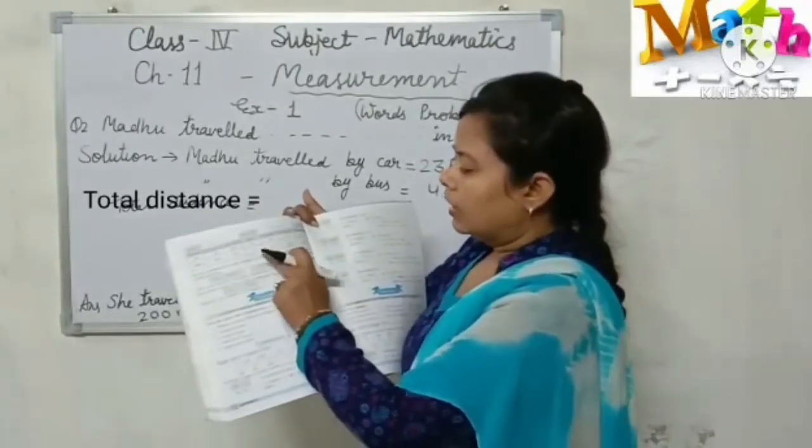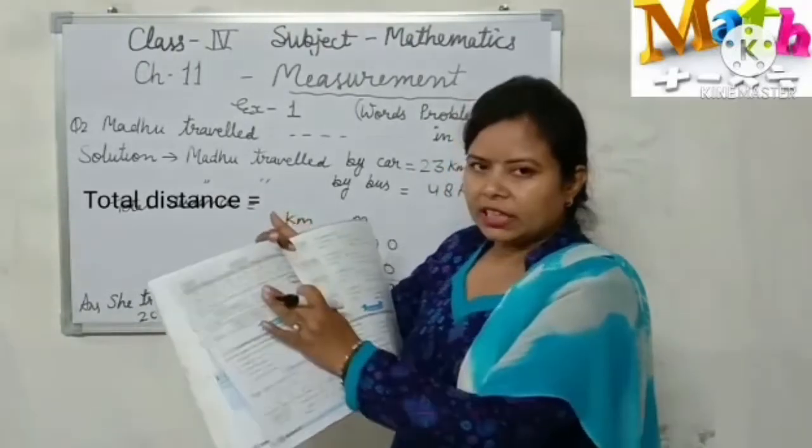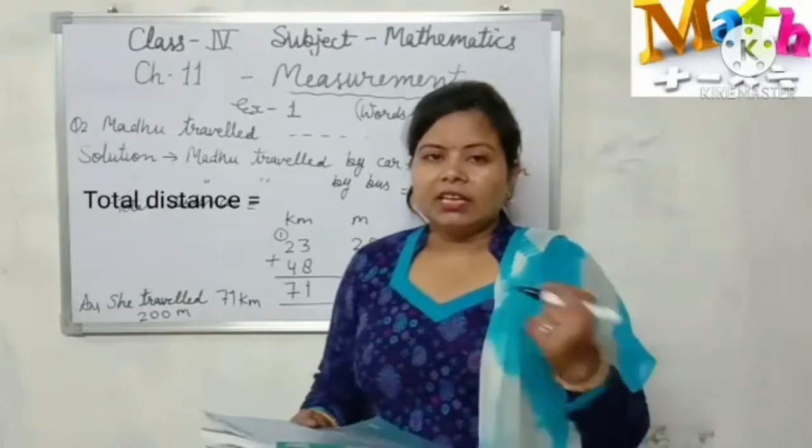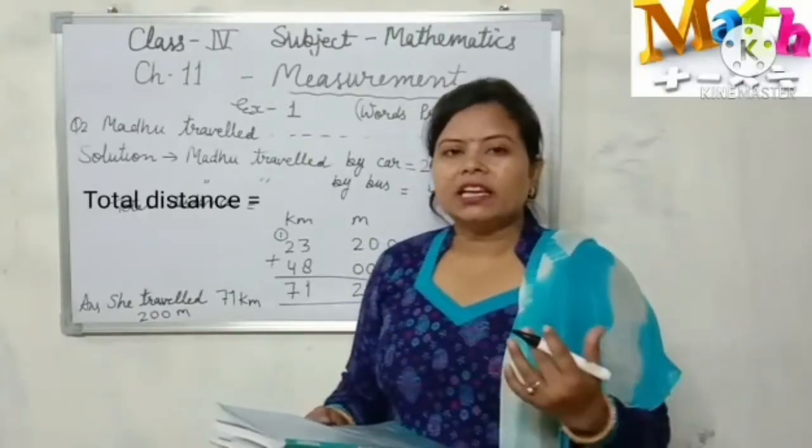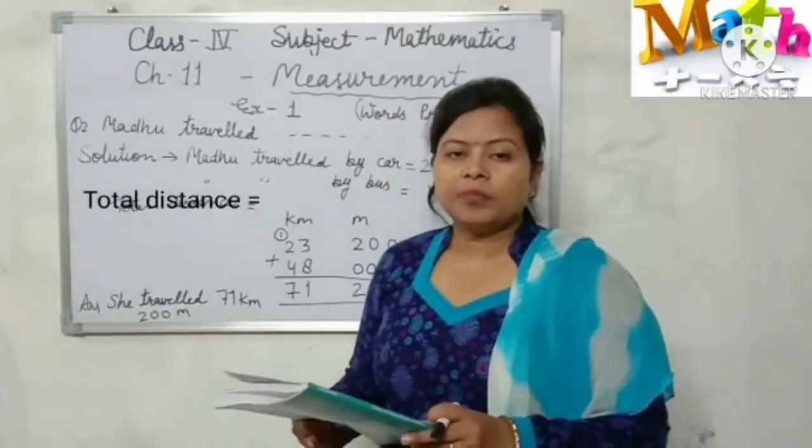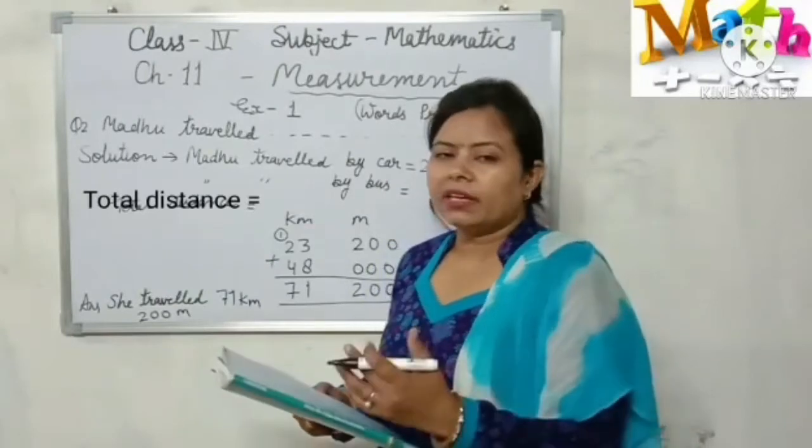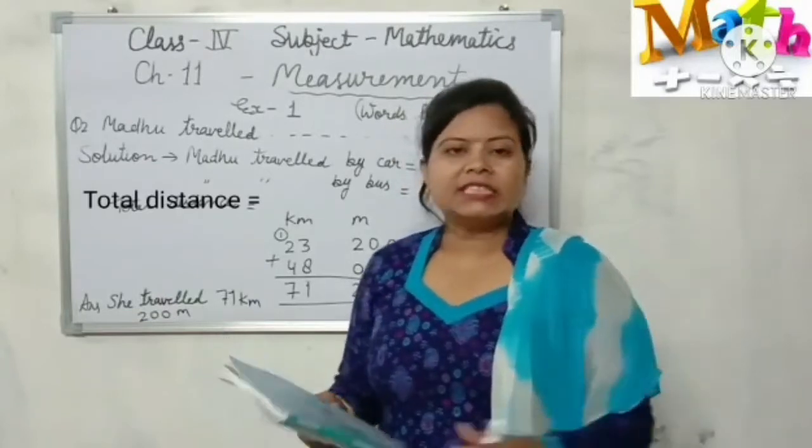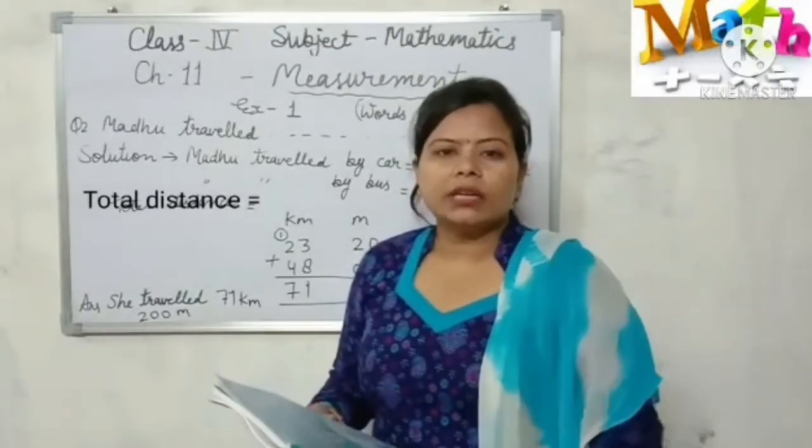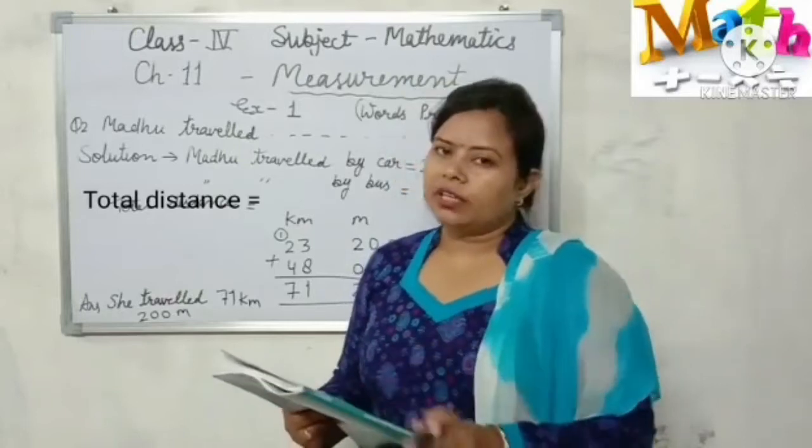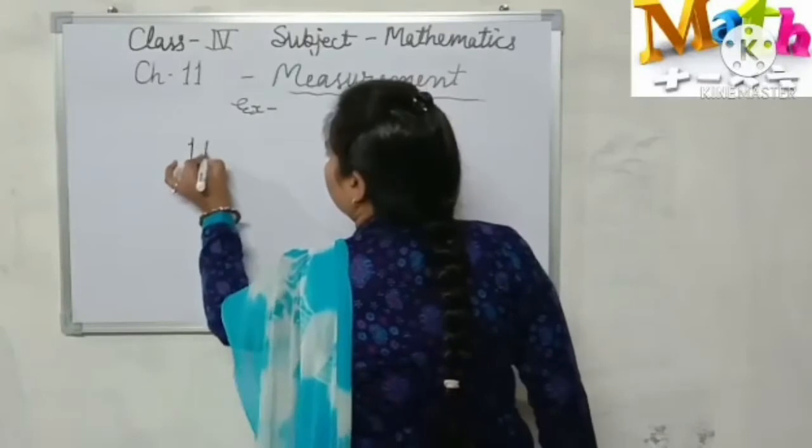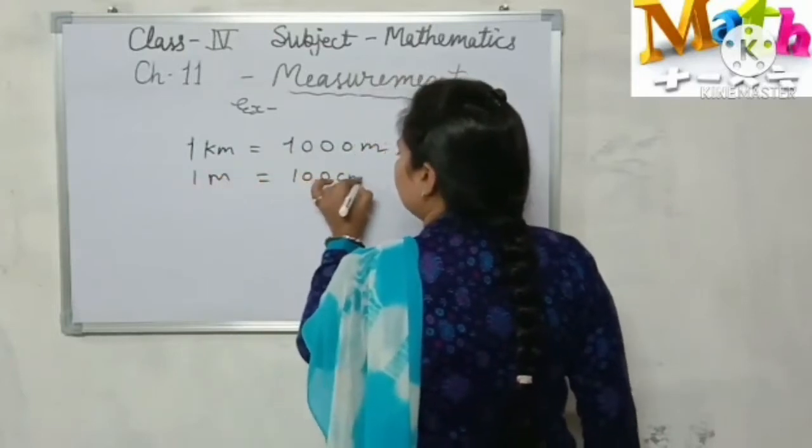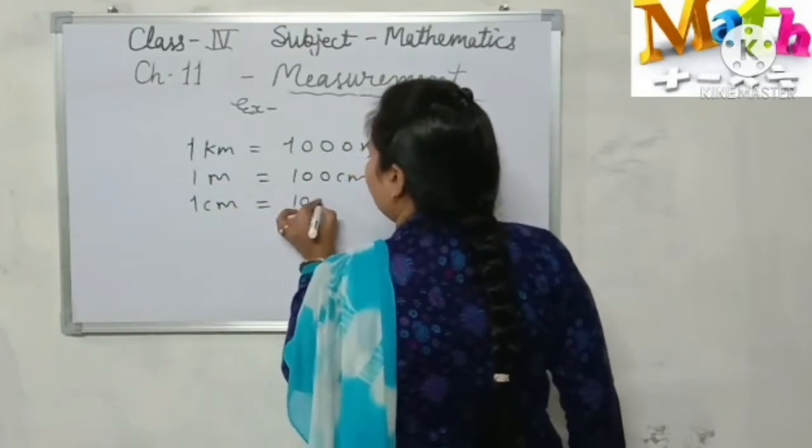Look at here, this is the table of basic units. You have to carefully see this. When we talk about distance, like one city to another, we use kilometer. So 1 kilometer equals 1000 meters, 1 meter equals 100 centimeters, 1 centimeter equals 10 millimeters.